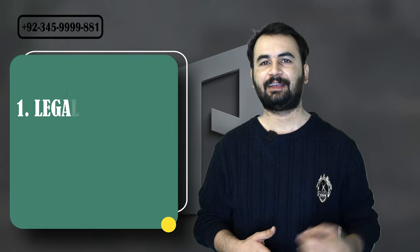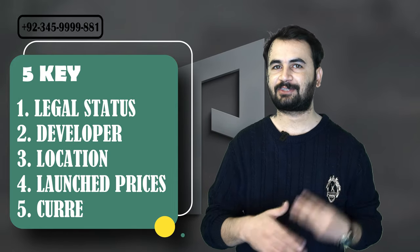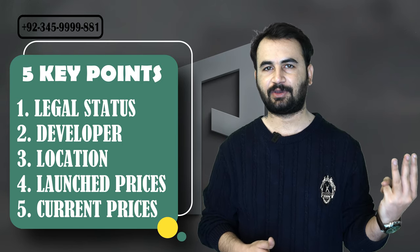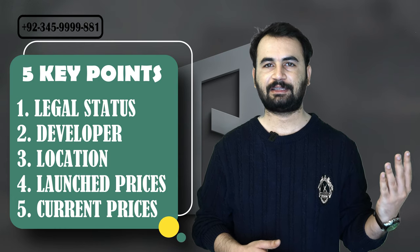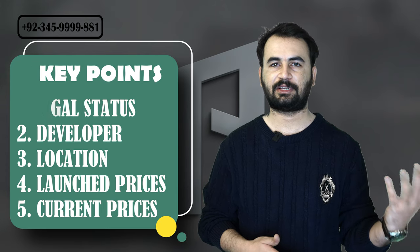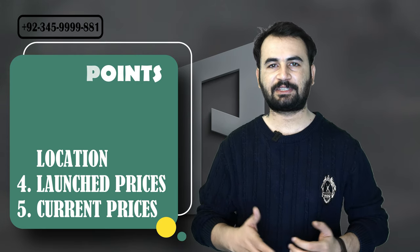Number one is what is the legal status of the society in which you want to invest. Number two, who is the developer or owner of the society in whose pocket your hard-earned money is going. Number three, what is the location of the society or project. Number four, what were the launch prices in that project or society. And number five, what are the current prices. Points four and five are basically for investors — they give proper detail on whether to invest or wait for a better project.